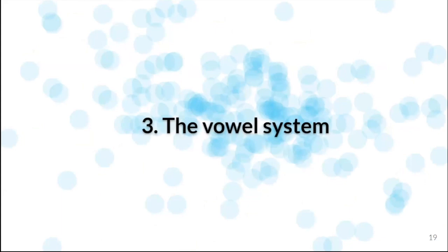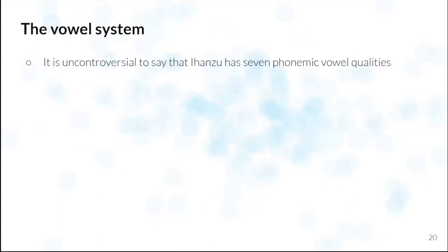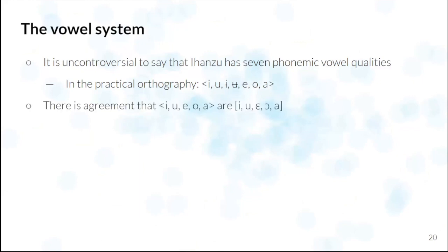And now a little bit about the vowel system. So, based on the previous literature, it's uncontroversial to say that Ihanzu has seven phonemic vowel qualities, and these are written thus in the practical orthography. And these kind of basic characters, there is agreement that these represent I, U, E, O, and A, but these barred characters, for these barred characters, it's not seemingly the same consensus, or it's not necessarily as obvious.